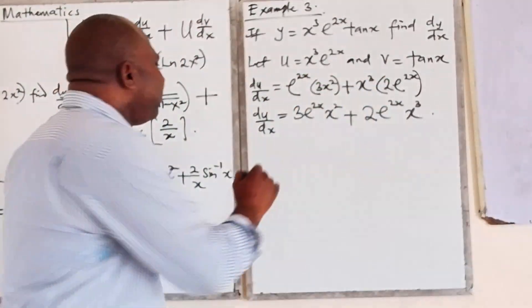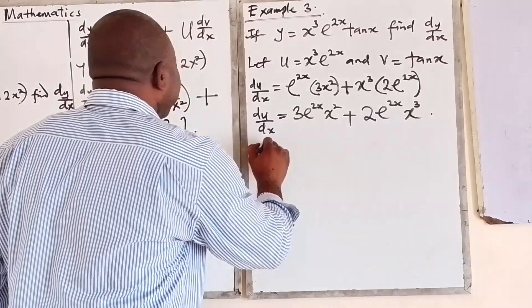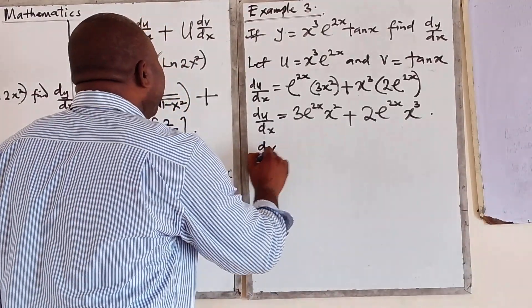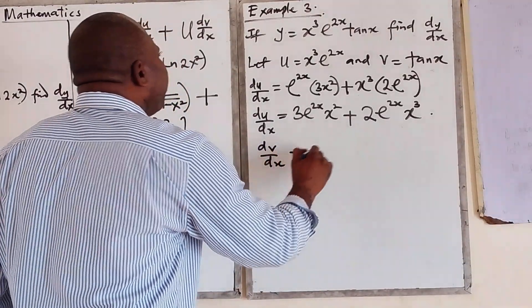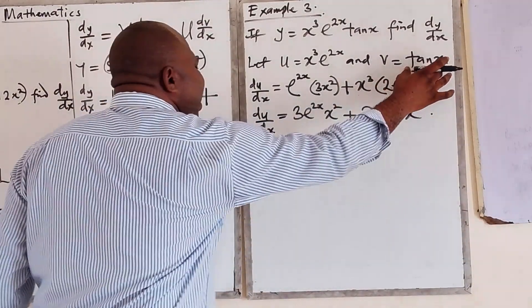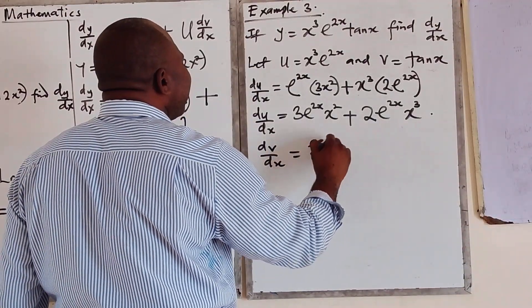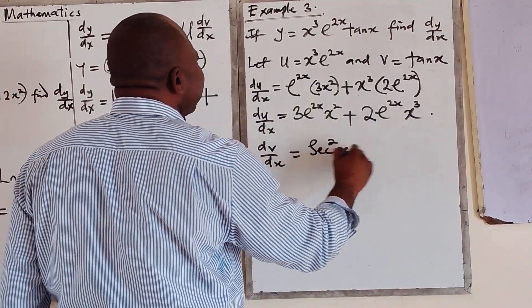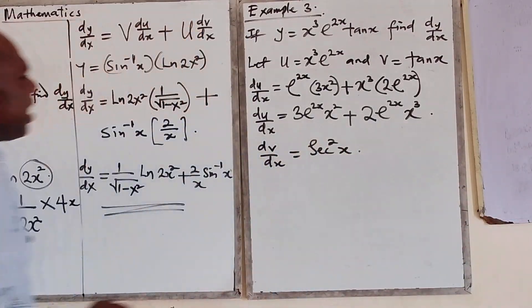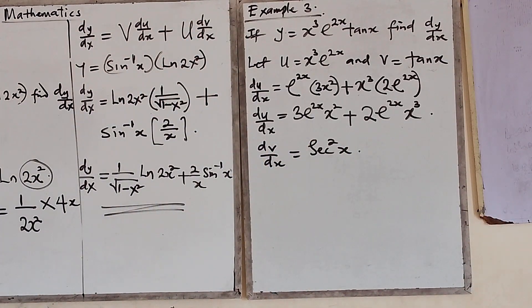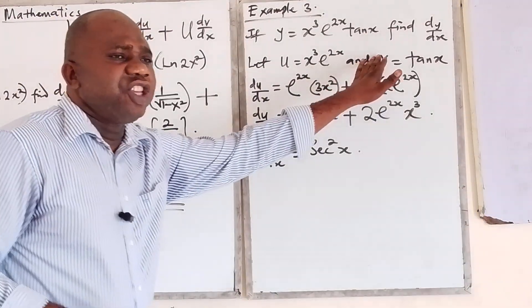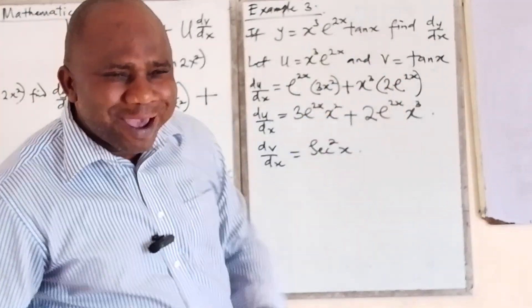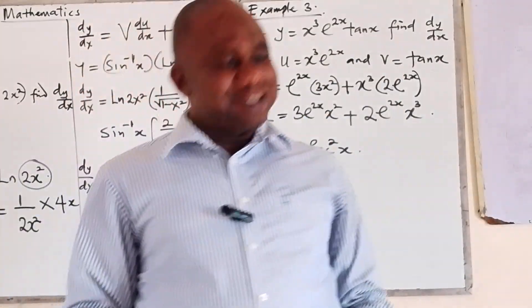Now for dv/dx. When you differentiate tan x, it gives you sec²(x). That is the standard derivative of tan x.